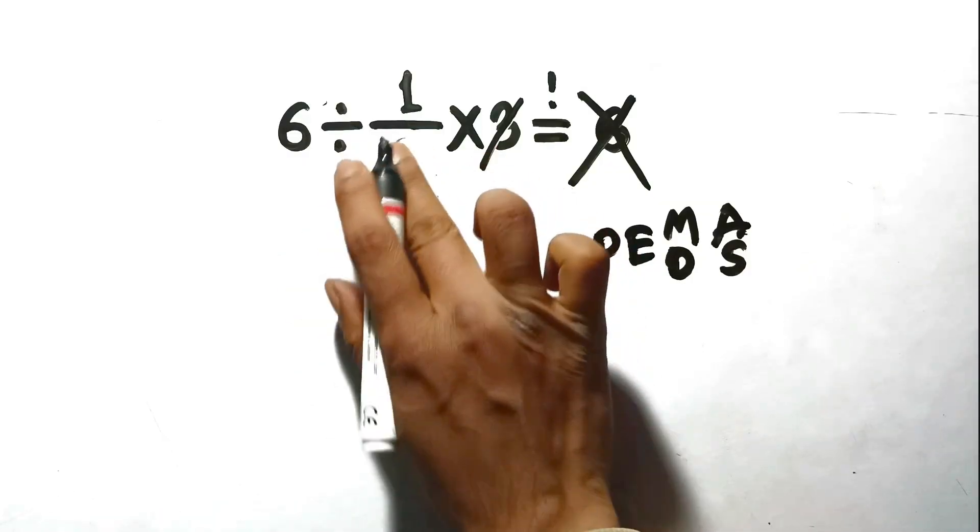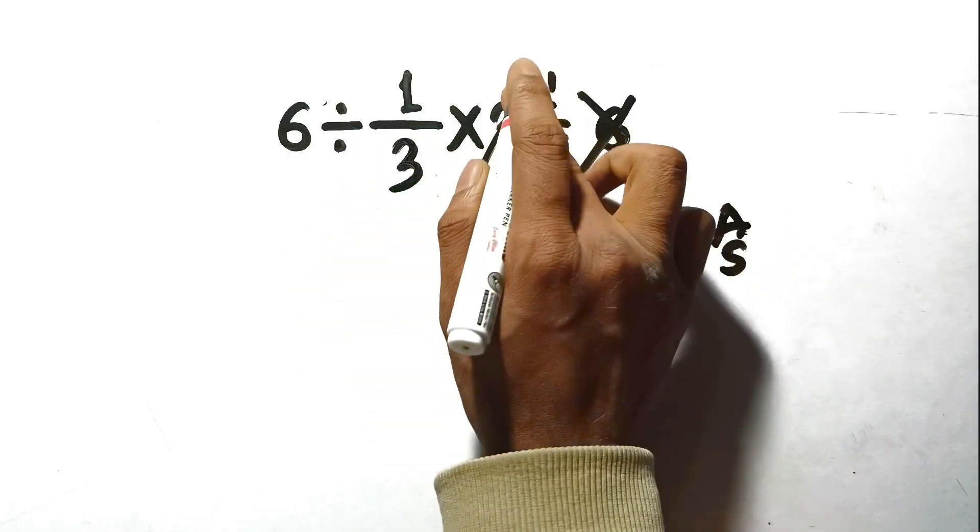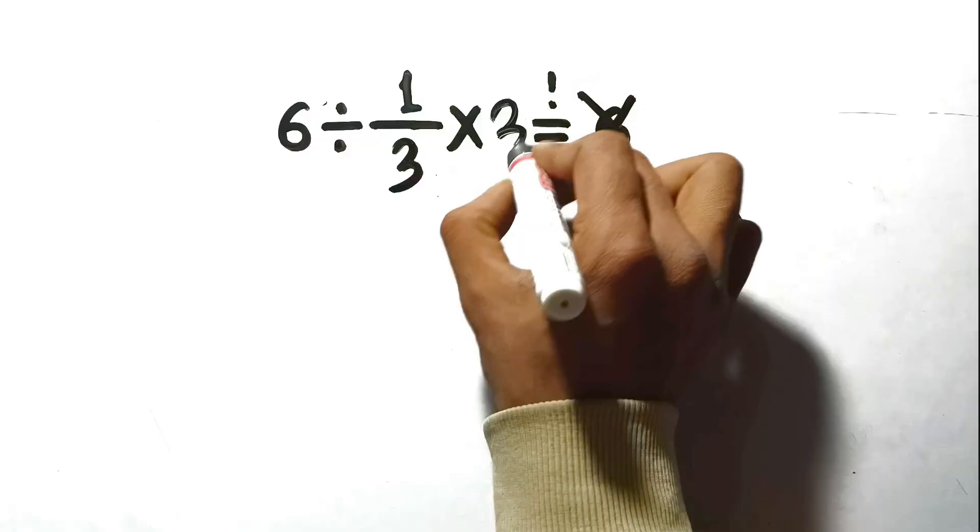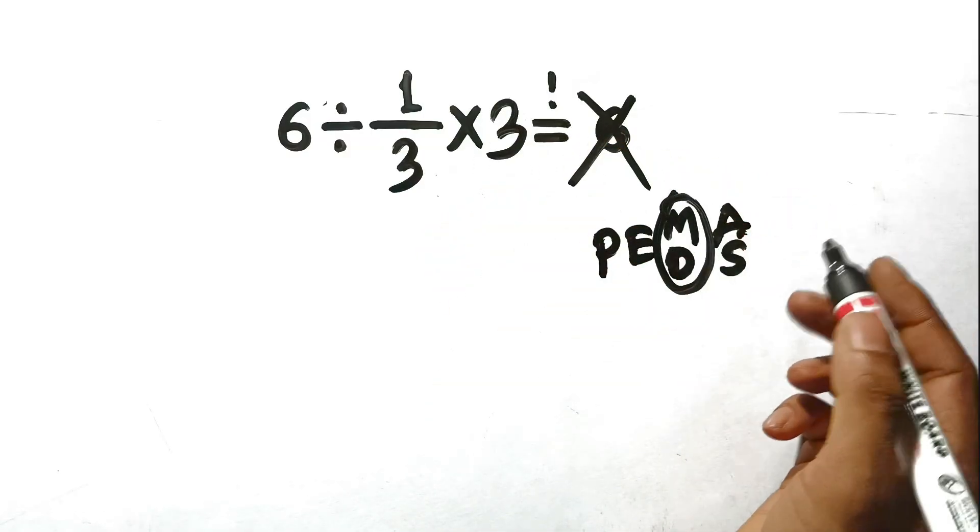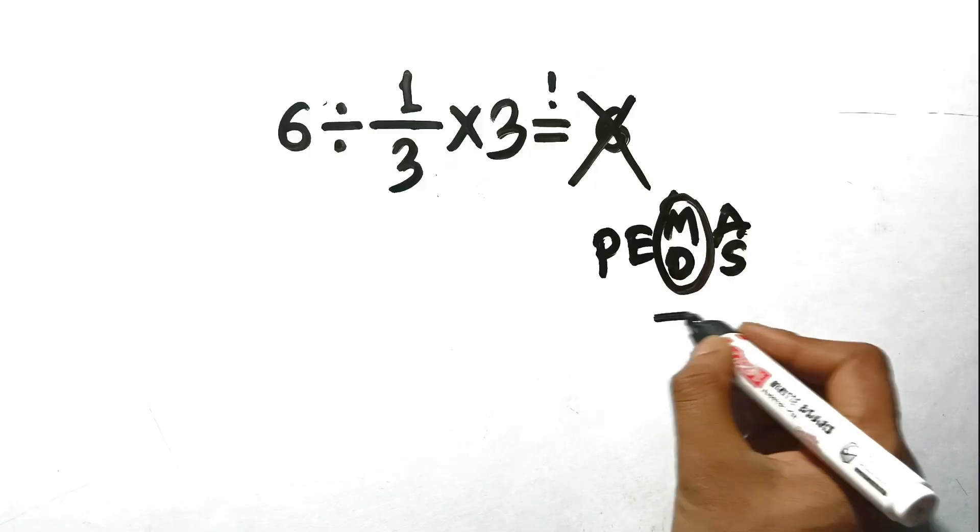In PEMDAS, or BODMAS, multiplication does not get to cut in line just because it looks like it cancels something. Division and multiplication are equal partners and must be solved strictly from left to right.